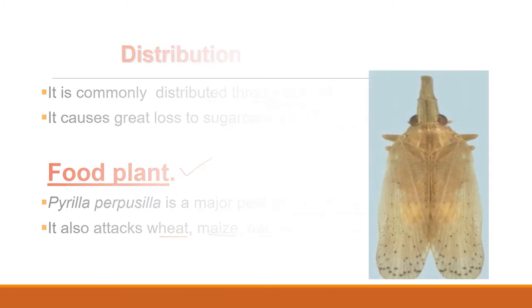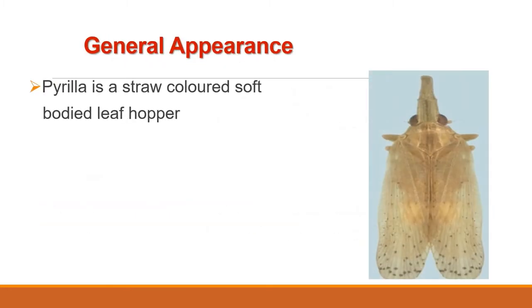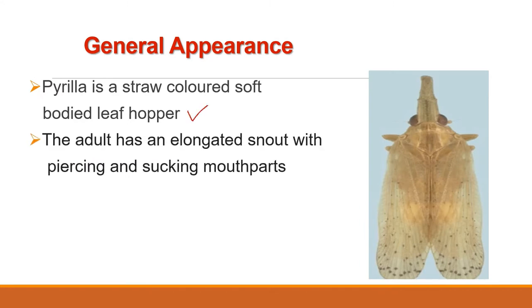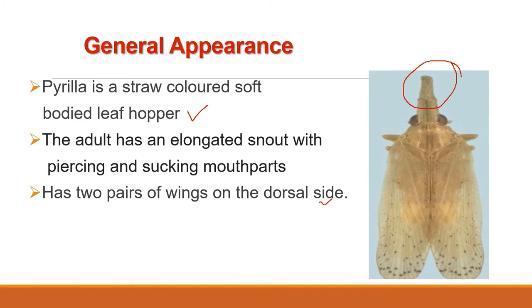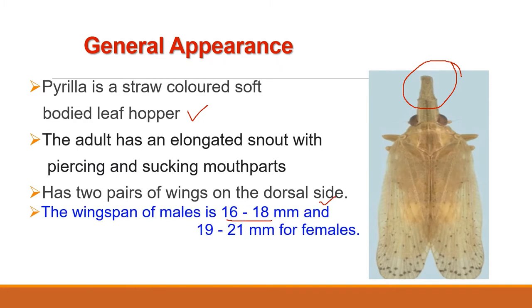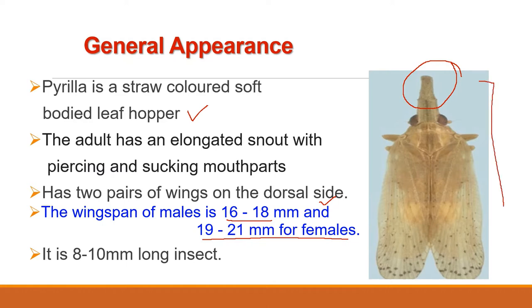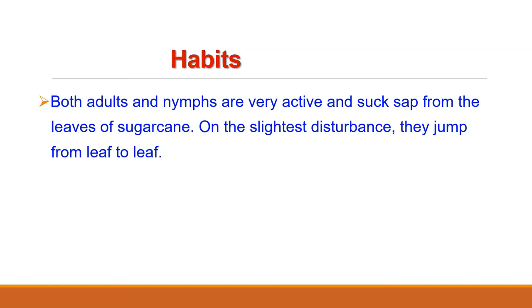Pyrilla is a straw-coloured soft-bodied leafhopper. The adult has an elongated snout with piercing and sucking mouthparts. It has two pairs of wings; wingspan of male is 16–18 mm and 19–20 mm for females. Overall length is 8–10 mm. It bears prominent red eyes and a pair of whitish-brown anal processes covered with white wax. Adults and nymphs live on leaves and are very active, sucking cell sap and jumping from leaf to leaf on the slightest disturbance.